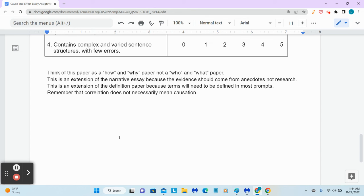And then, a couple of hints here. Think of this paper as a how and a why. Not a who or a what. The what, the causes and effects, have been provided for you. How and why are you making the speculations? How and why are you saying that something is a cause or something is an effect? And then, I think, this is an extension of the narrative. Evidence is coming from anecdotes. Your personal life, not the research. You're going to have to define dog person. You're going to have to define cat person. You're going to have to define dystopia or utopia in terms of this essay. You're going to have to define popularity. You're going to have to define almost all of the terms here at some level.